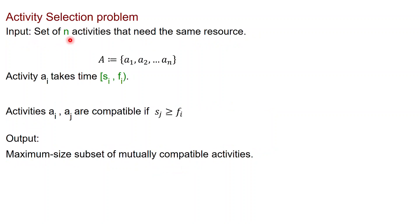The input here is a set of n activities that need the same resource. So for example, you want to take classes and there is a set of n classes that you want to take. These activities are denoted a₁, a₂, and so on. Each activity aᵢ has a start time sᵢ and finish time fᵢ. The activities are compatible if the start time of one is after the finish time of the other. What you want to do is compute a maximum size subset of activities which are mutually compatible.